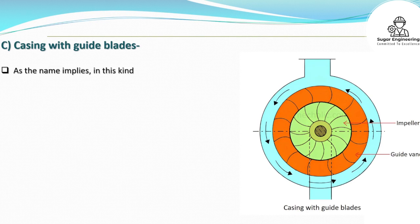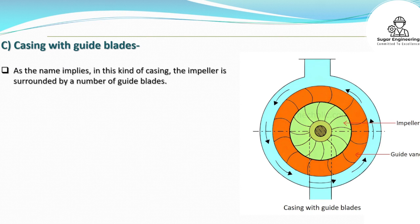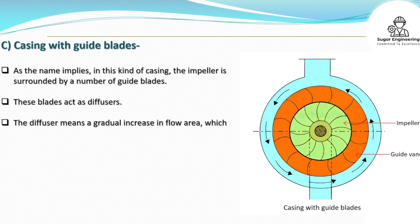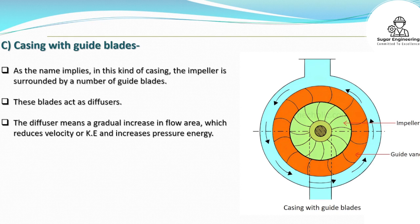C. Casing with guide blades: As the name implies, in this kind of casing the impeller is surrounded by a number of guide blades. These blades act as diffusers. A diffuser means a gradual increase in flow area, which reduces velocity or kinetic energy and increases pressure energy.